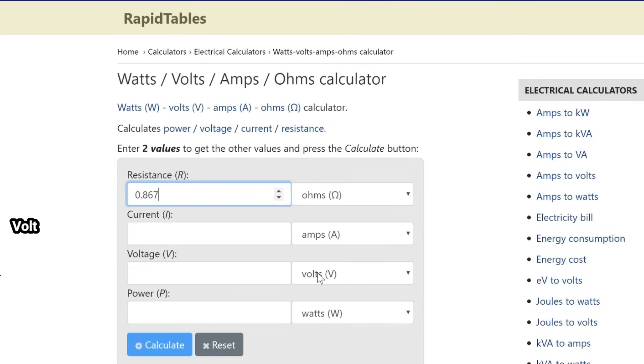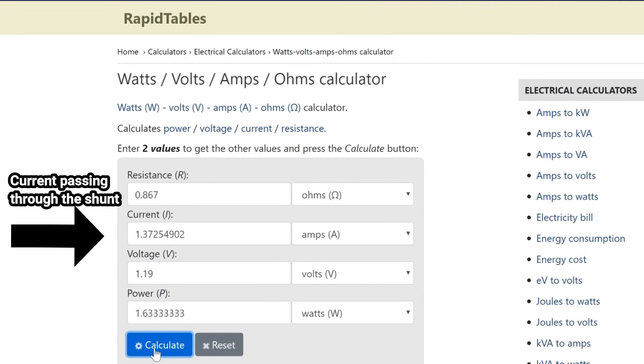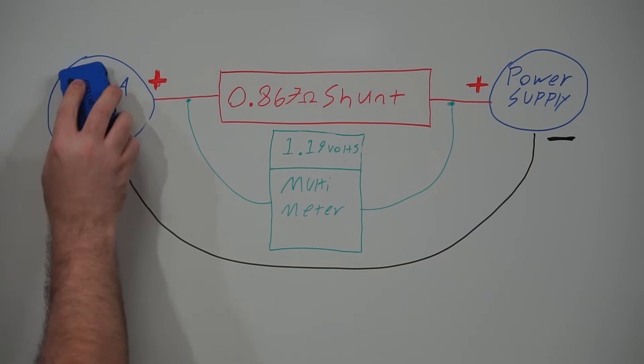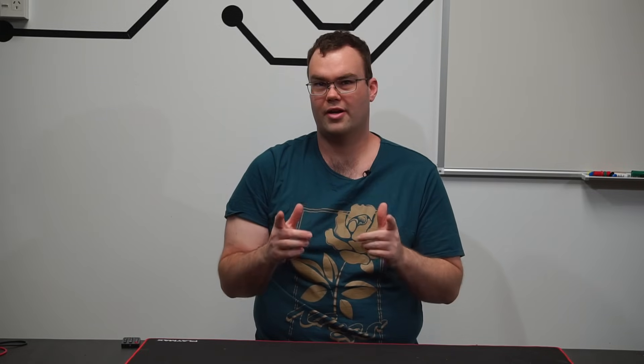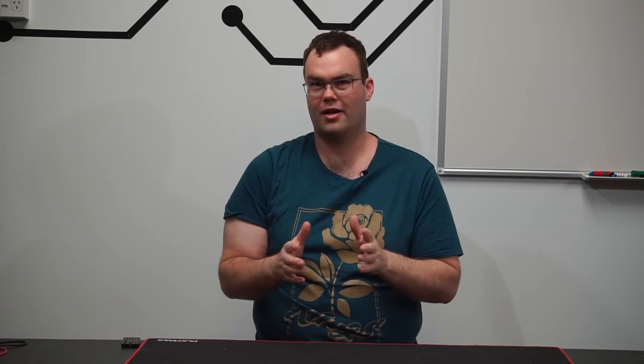If you aren't familiar with Ohm's law, then go watch that video then come back to this video. Okay, so I'll enter my shunt's resistance, which was 0.867 ohms, and the voltage drop across the shunt, which is 1.19 volts. Press calculate, and now we know the current draw is 1.37 amps. And that's how a shunt is used to measure current.